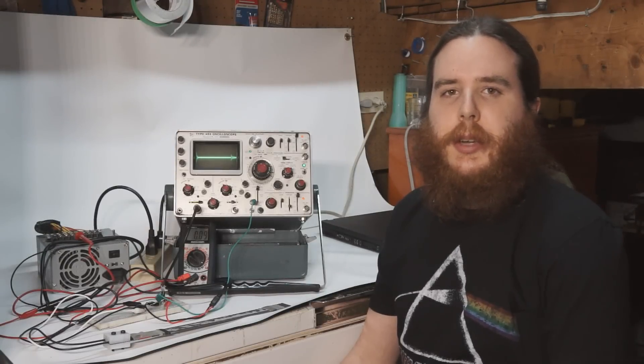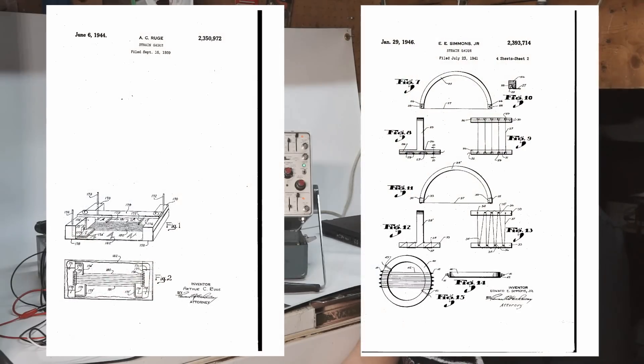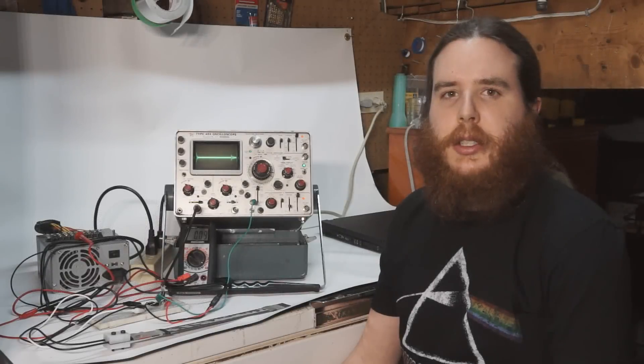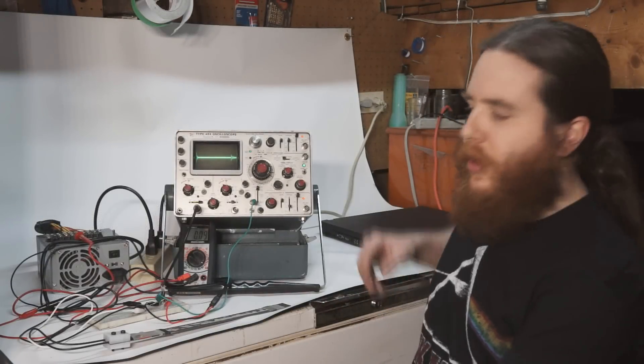Developed in the late 1930s independently by both Arthur Ruge and Edward Simmons, the strain gauge allows a way to electrically measure the mechanical deformation of an object.